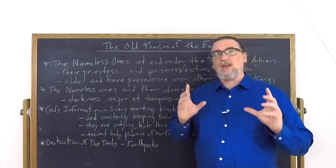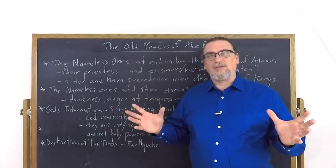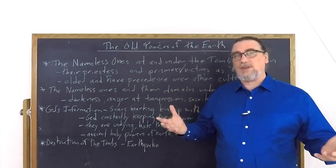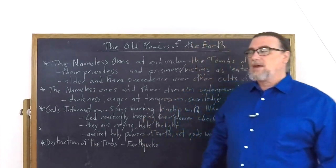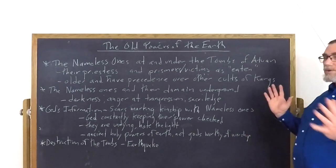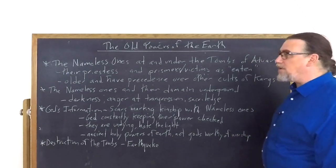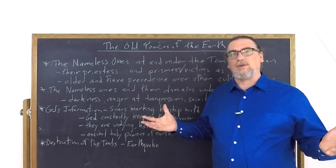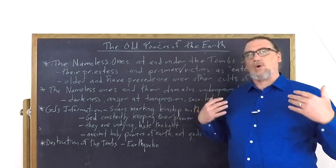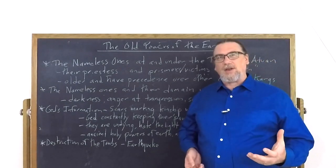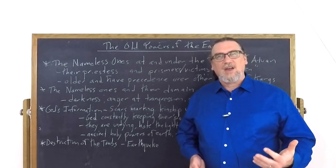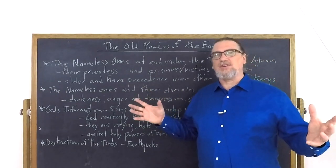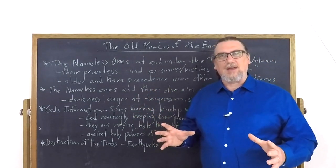And then we have the Chthonian gods or powers of the earth who we don't see, and we're not quite sure if they have power or not. What we do have going on before that is that the Nameless Ones have their domain at the tombs and underneath the tombs. What we see mentioned over and over again is not just darkness, but their vengeance, their anger, their wrath.